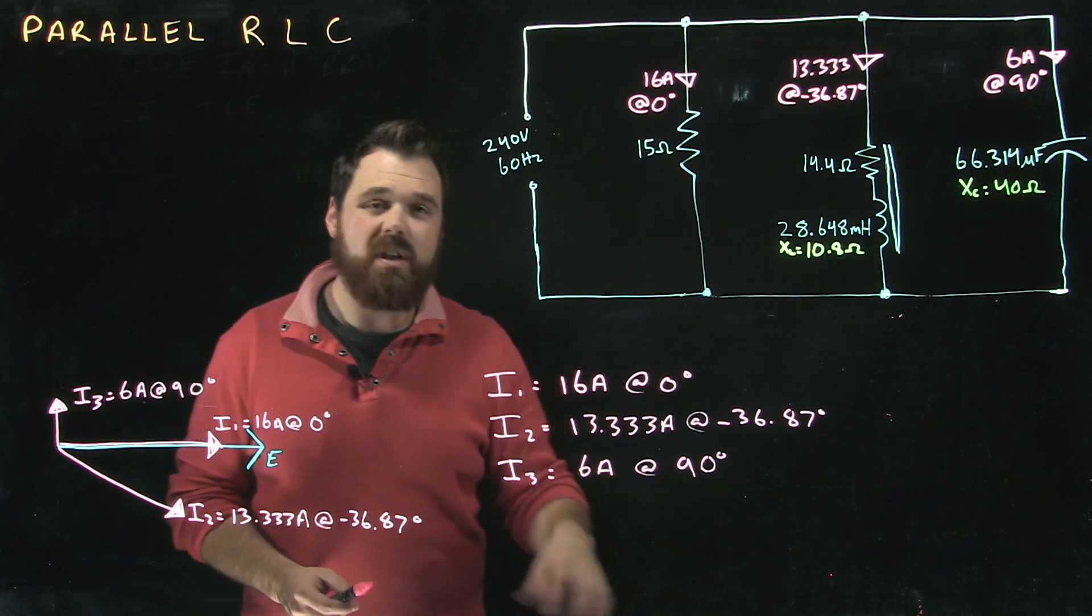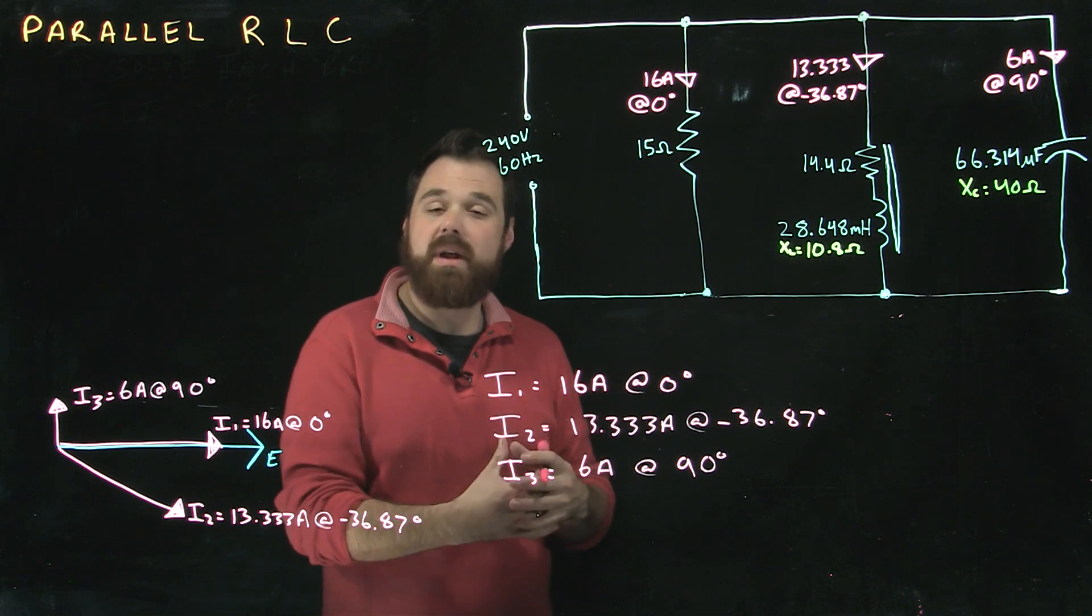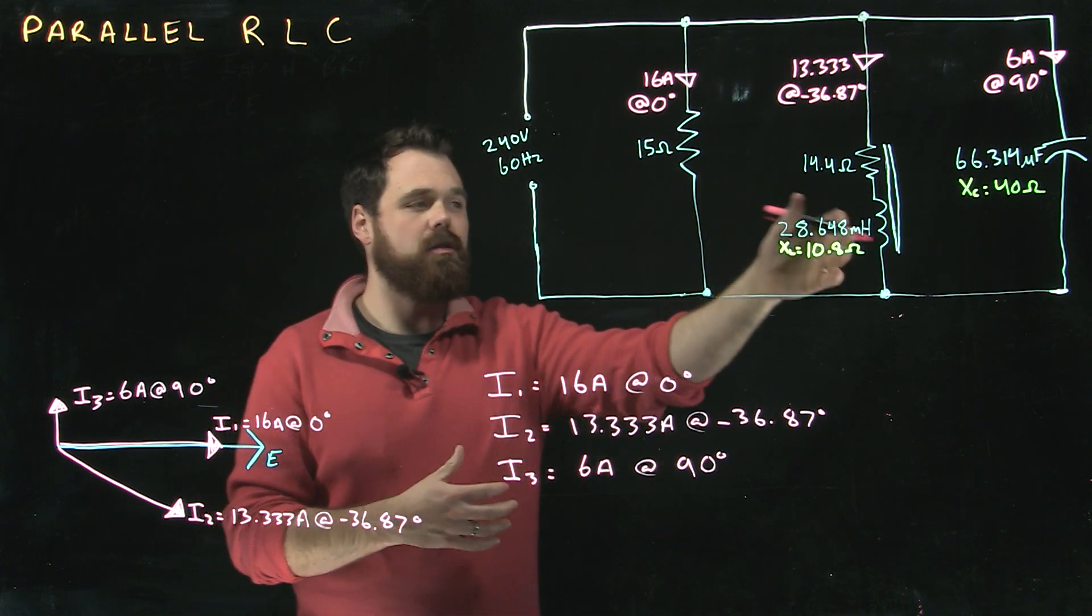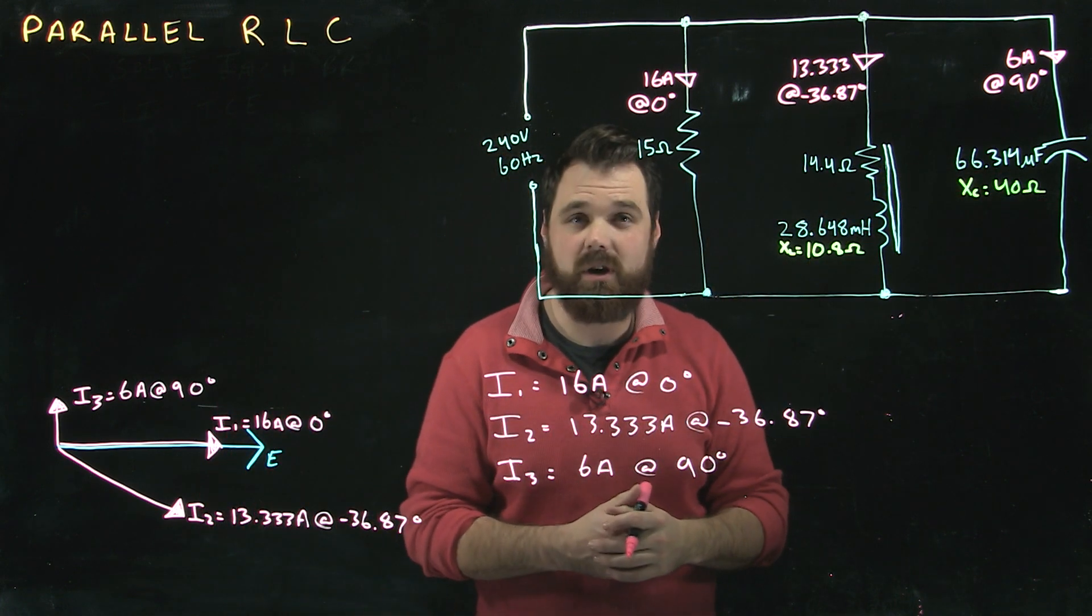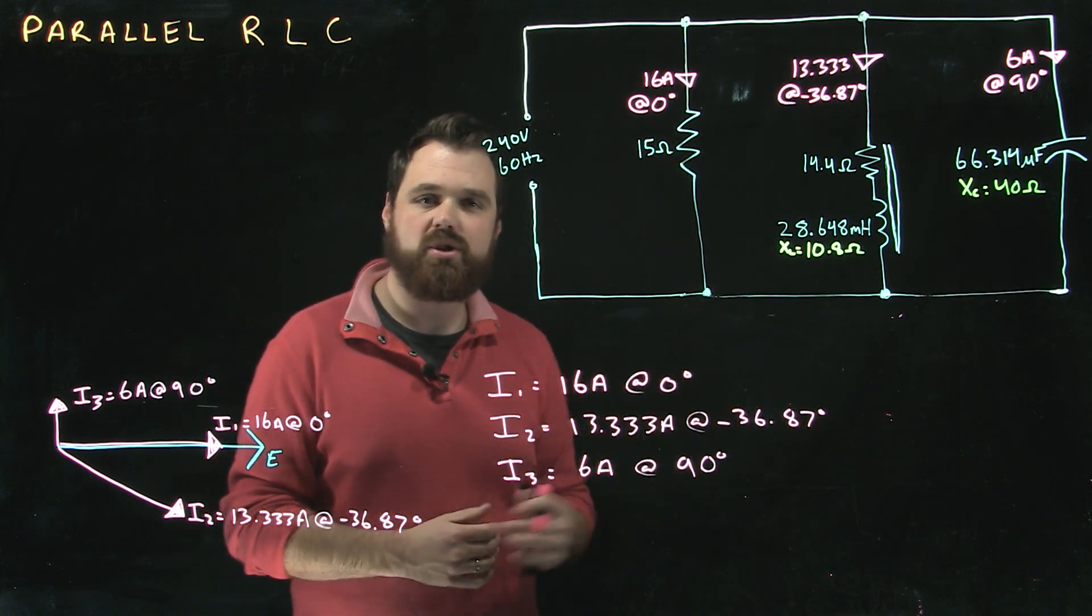Hi welcome back. This is the second video in our parallel RLC series. What we're going to do now is take the current values which we solved in the last video in our three different branches, combine them, and solve for the current total in the circuit.